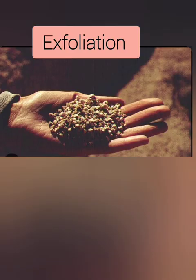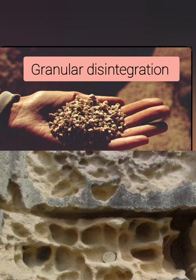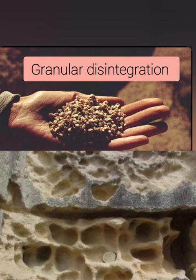Number three: granular disintegration. This is the breaking up of rocks into small particles or grains, common in coarse-grained intrusive igneous rocks such as granite. In heterogeneous rocks, particles expand and contract at different rates when heated and cooled. This differential expansion and contraction causes stress and strain within the rocks, eventually causing individual rock grains to break off from the main rock mass.